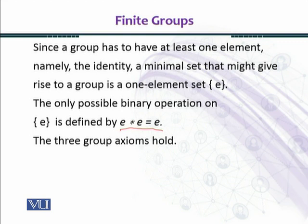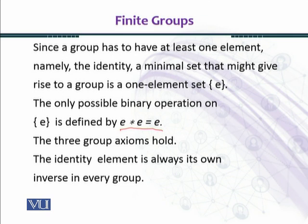You can see that the closure property holds in singleton {E} and the associative property also holds, because there is only one element E and you can multiply this element three times in any order and shall get the same answer. E is the identity element, so the first three properties of the group are satisfied. The identity element is always its own inverse in every group, so the inverse law is also satisfied. Thus singleton {E} forms a group under binary operation star.